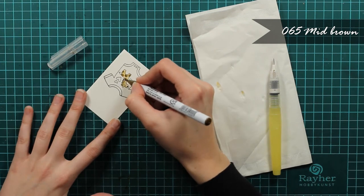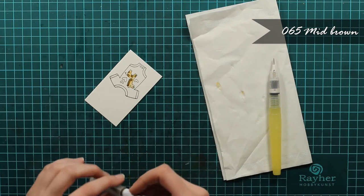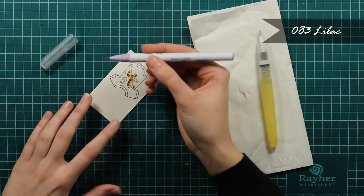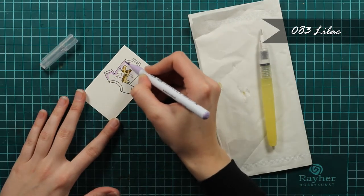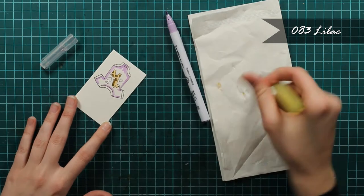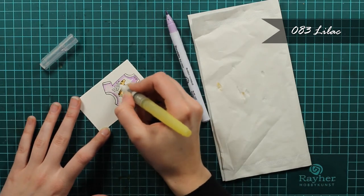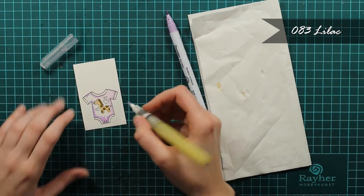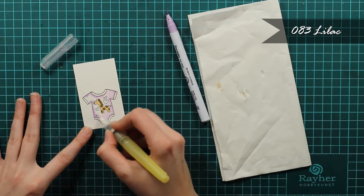The shading isn't as important as the color of the actual onesie. So I will use this purple color and I will simply blend it out with my watercolor brush.